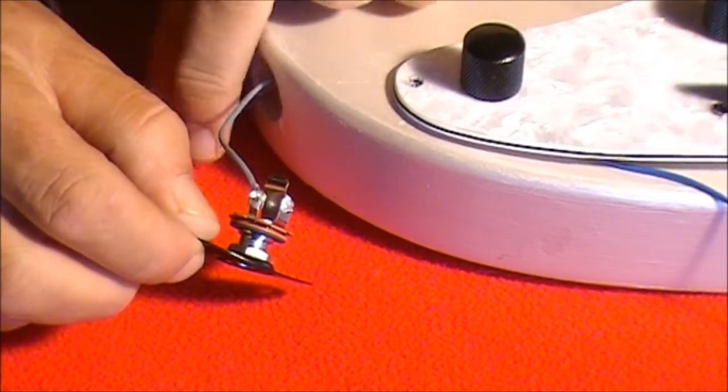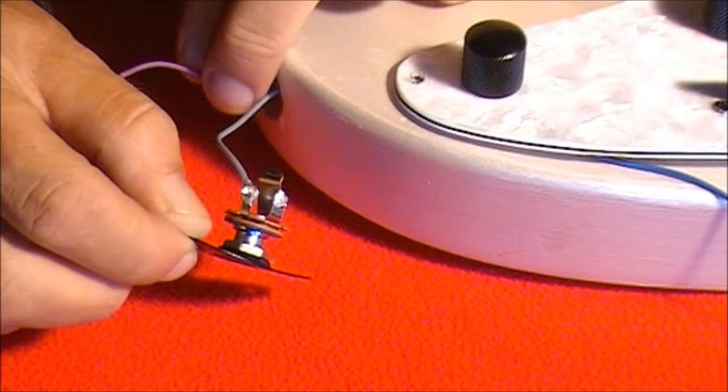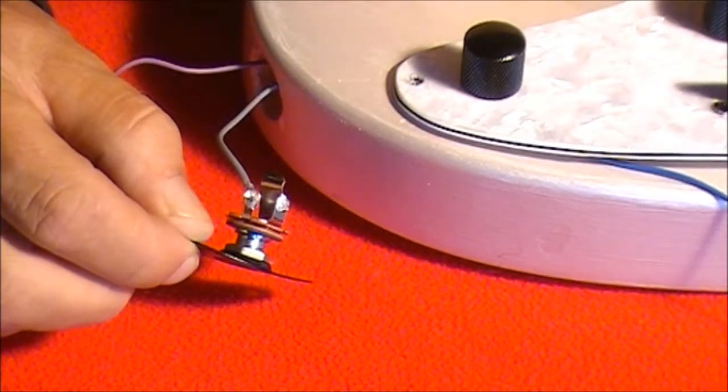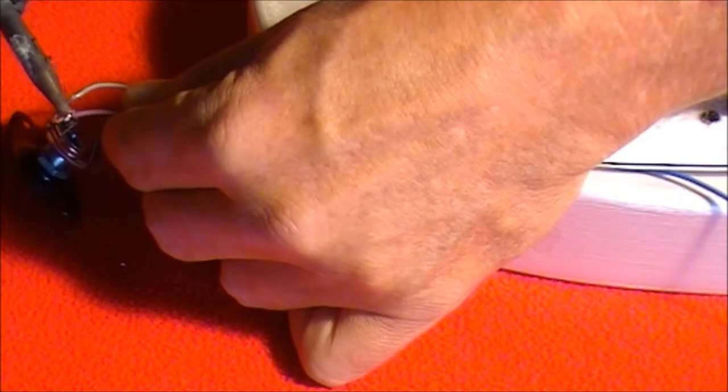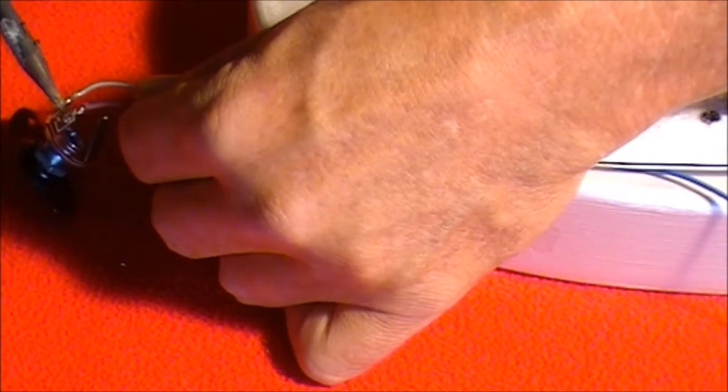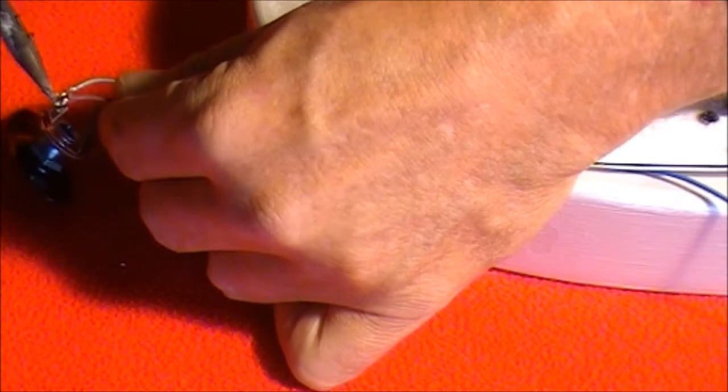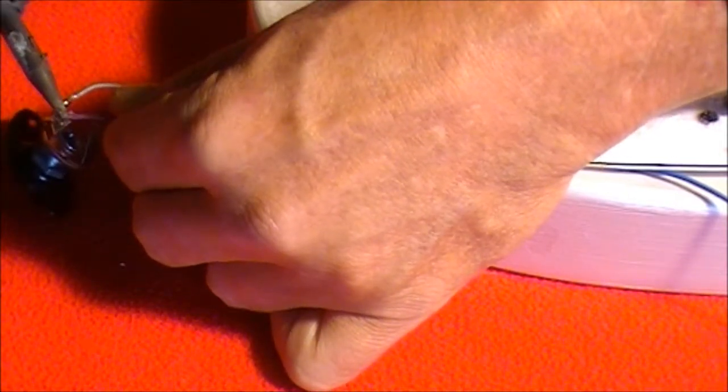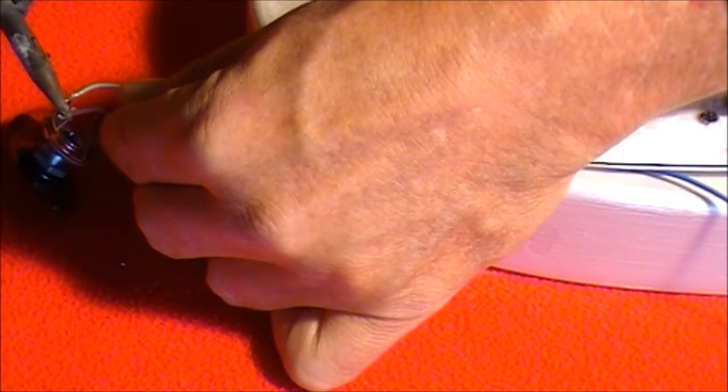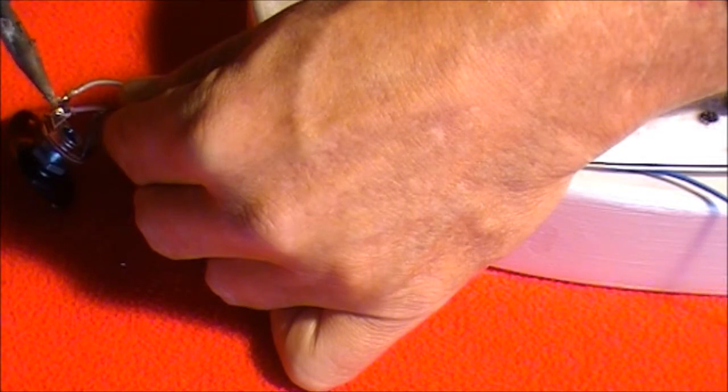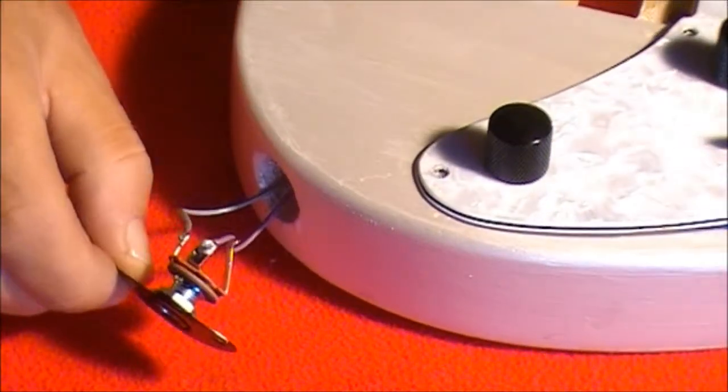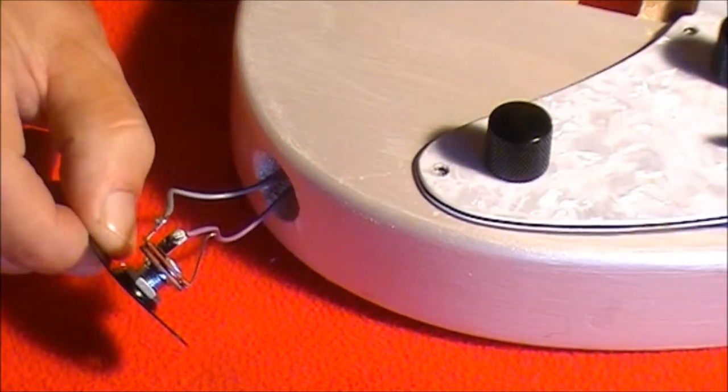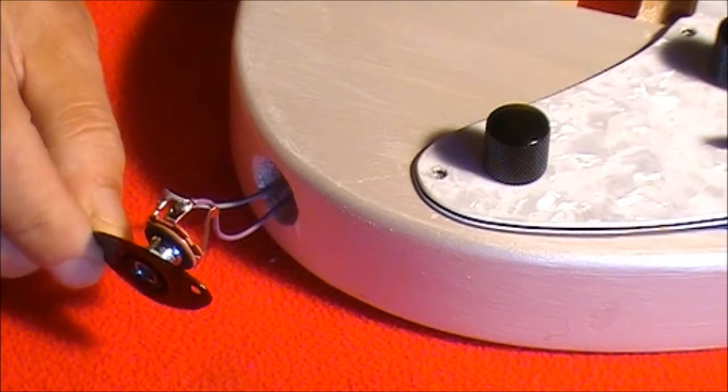Now, step two, I need to wire our purple earth wire to the inner sleeve. Let's do that now. And there you go. That's our hot wire and our earth wire wired up to the output jack.